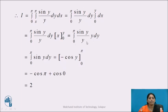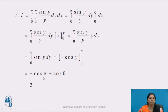The y gets cancelled. So the integral becomes integration from 0 to π, sin(y) dy. We know that the integration of sin(y) is −cos(y), with the limits 0 to π. It gives us −cos(π) − (−cos(0)) = −cos(π) + cos(0). As cos(π) = −1, minus of −1 becomes +1, plus cos(0) = 1. So we get the value of the integral as 2.